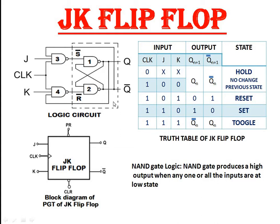The truth table and the block diagram is shown here. This block diagram is for a PGT clock pulse. That means this flip-flop works when the clock signal makes a transition from 0 to 1, or low to high. The working can also be explained with the help of NAND gate logic — that is, a NAND gate produces a high output when any one or all the inputs are at low state.